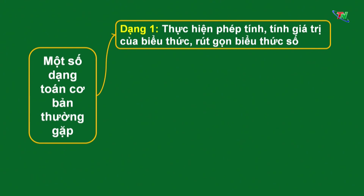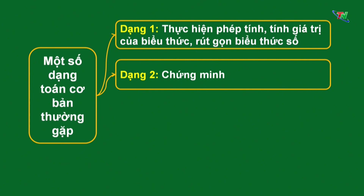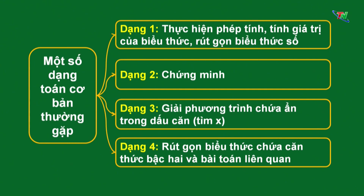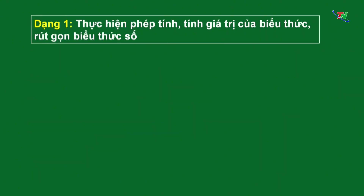Dạng bài tập này thường với đề thi vào trung học phổ thông ở tỉnh Thái Nguyên thì thường bao giờ cũng chiếm một câu. Dạng bài tập thứ 2 là bài tập chứng minh. Dạng bài tập thứ 3 là giải phương trình chứa ẩn trong dấu căn, hay còn gọi là bài toán tìm ẩn. Dạng thứ 4 là rút gọn biểu thức chứa căn thức bậc 2 và bài toán liên quan - dạng này bài tập rất phong phú và sẽ để dành cho những buổi ôn tập phía sau. Buổi học hôm nay chúng ta sẽ đi sâu vào dạng số 1: thực hiện phép tính, tính giá trị của biểu thức và rút gọn biểu thức.